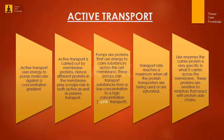Active transport uses energy to pump molecules against a concentration gradient. Active transport is carried out by membrane proteins; different proteins in the membrane play a major role in both active and passive transport. Pumps are proteins that use energy to carry substances across the cell membrane and can transport substances from a low concentration to a high concentration - this is called uphill transport.